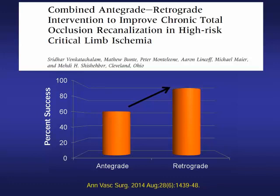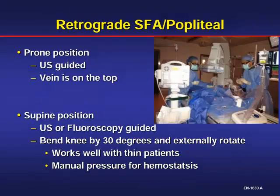So if we try antegrade for five to ten minutes and it doesn't work, we go retrograde. The retrograde approach has three areas where you can get retrograde access. The first is a retrograde SFA popliteal approach.